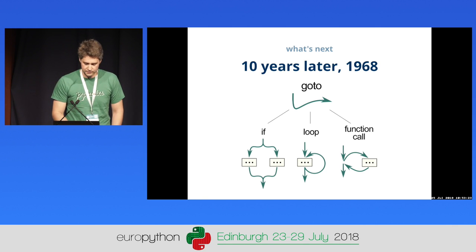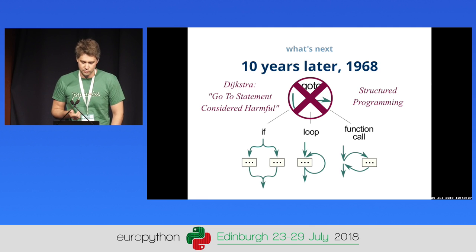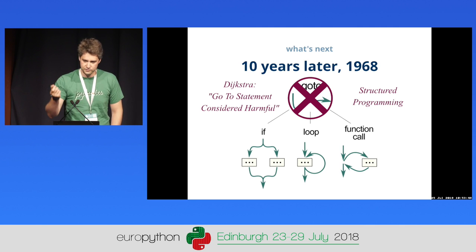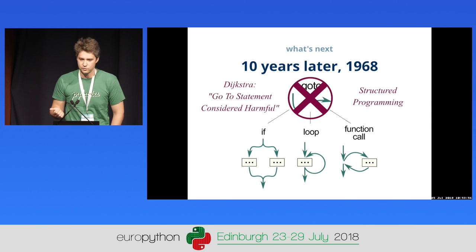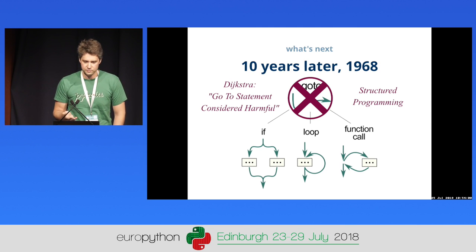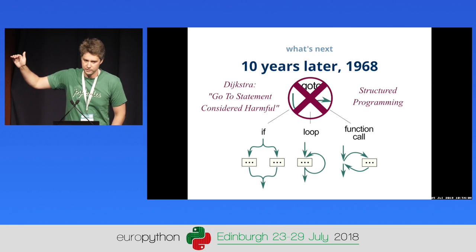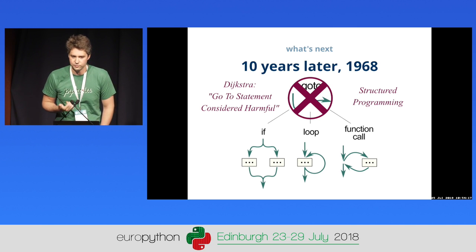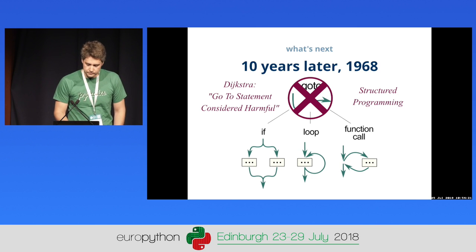Ten years later, Dijkstra wrote a letter titled 'Go To Statement Considered Harmful' and came up with structured programming: if blocks, loops, function calls — one entrance point and one exit point, so code is always predictable, no random jumps. If you think about goto and asynchronous programming, you see a lot of parallels. In AsyncIO, if you use create_task(), it creates a task that runs in parallel and you have no control over it — if it fails with an exception, you can't really react to it; you might see it in the logs, but nothing else.